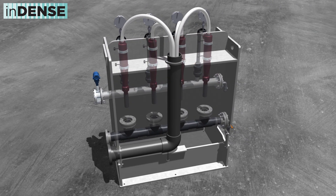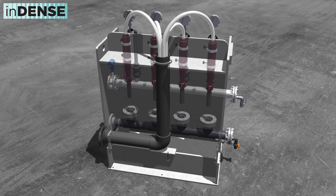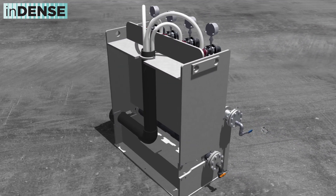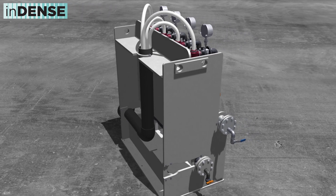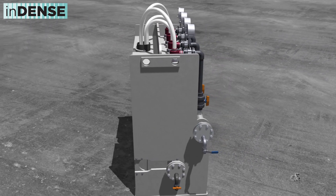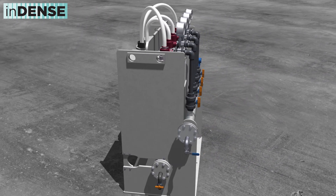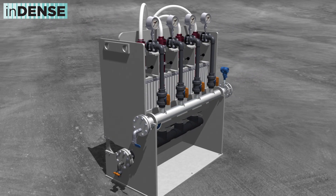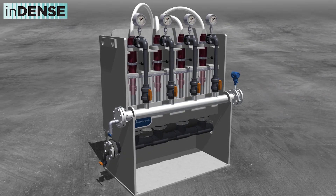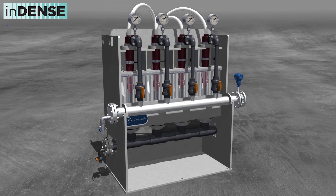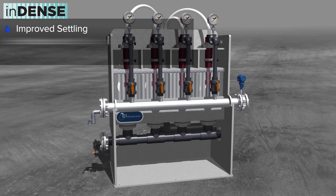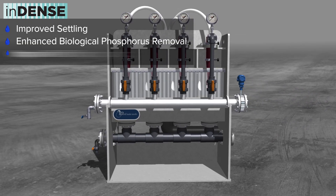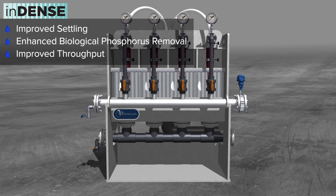World Water Works' InDense Gravimetric Selection Technology is designed to promote the selection and retention of denser biomass, allowing the conventional activated sludge process to be augmented with improved settling, enhanced biological phosphorus removal, and improved throughput.